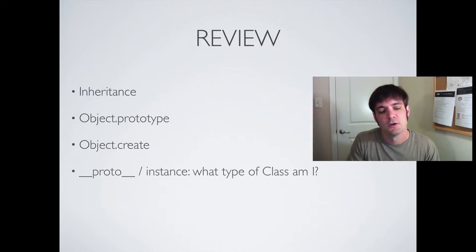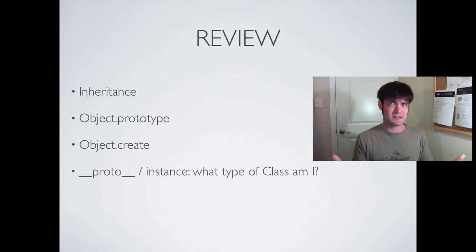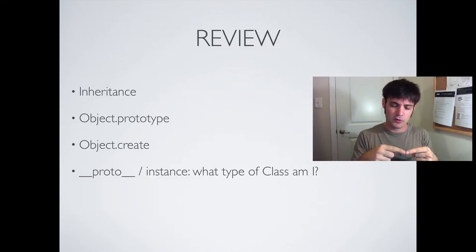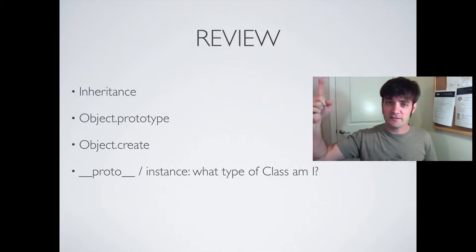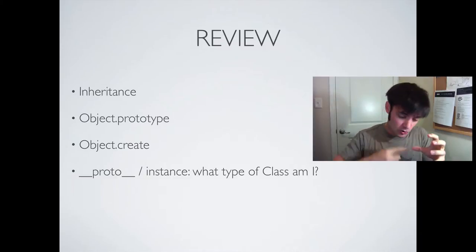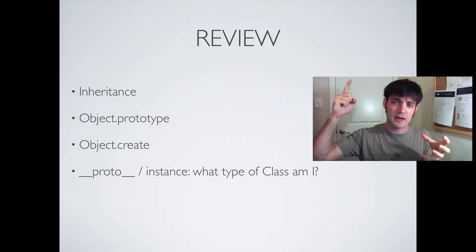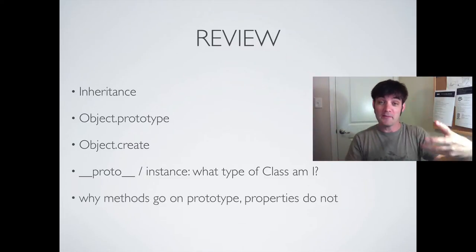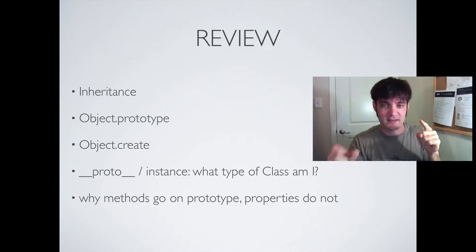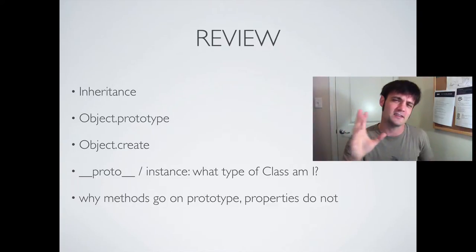In proto, we learned how an instance can say 'what class am I?' — the __proto__ points to that class definition, specifically the prototype of the class it represents. object.create helps set that correctly. If it doesn't find a method, it'll walk up the prototype chain to find that method. If it's not in human gladiator, doesn't have the roll method, it'll look up and say the gladiator that it extends from has a roll method and use that. We also learned why methods go on prototype but properties do not — as soon as you change a property, all classes share that same property until you set it, and then the instance gets a unique value.